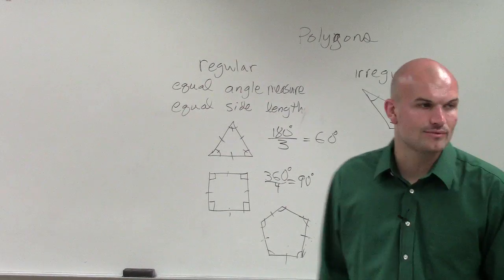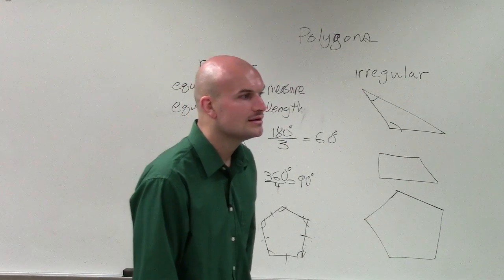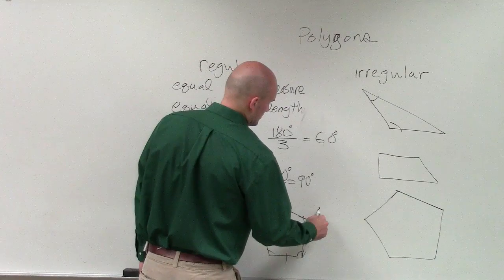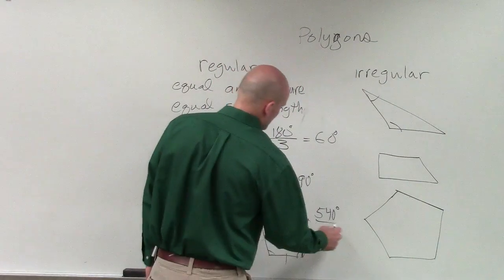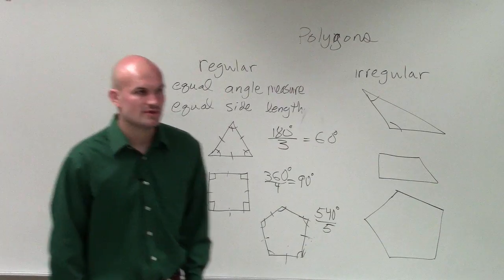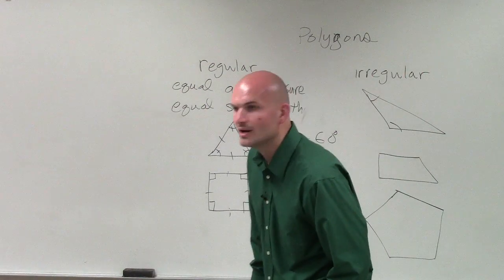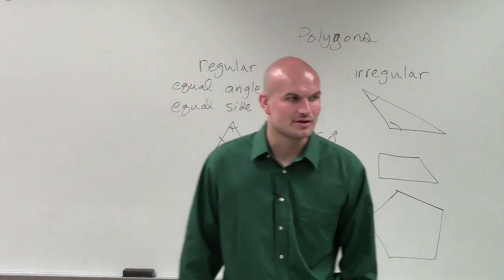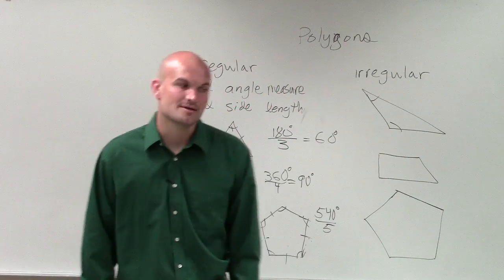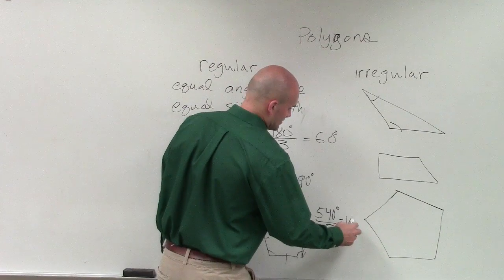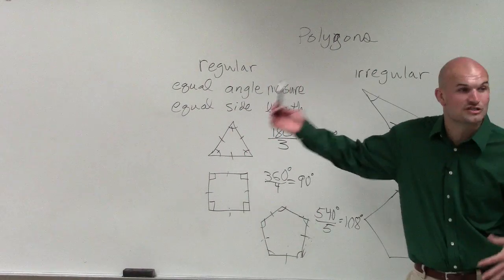What about a pentagon? How many angles? What's the sum of all the angles in a pentagon? 540. And then how many angles do we have? Five. So then, what is the measurement of each individual angle? Well, 5 goes into 500, 100 times. And then 5 goes into 40, 8 times. It would be 108.